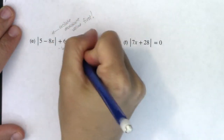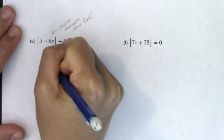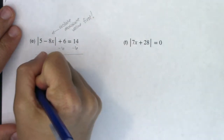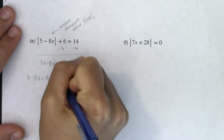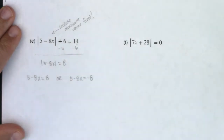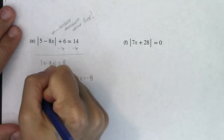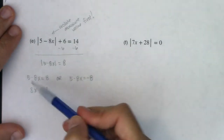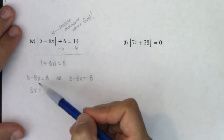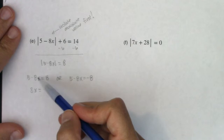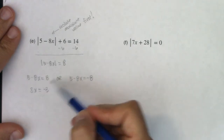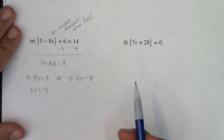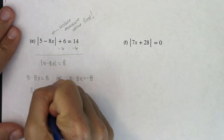Working through example 5e: I subtract 6 first, and get that the absolute value of 5 minus 8x equals 8. Then I apply the mechanics: 5 minus 8x equals 8, or 5 minus 8x equals negative 8. Solving the first — I move negative 8x to the right side, giving 8x equals negative 3, so x equals negative 3 eighths. I prefer positive coefficients, so I rearranged accordingly.